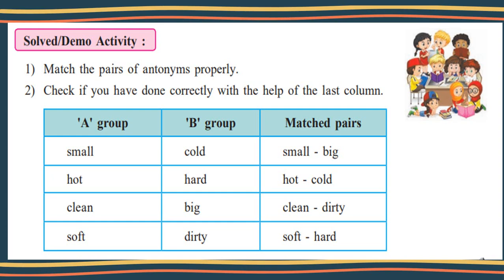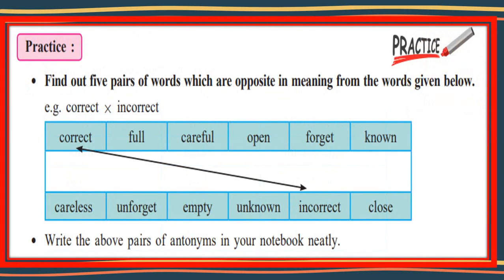And see next activity. Here is given one practice activity. Find out five pairs of words which are opposite in meaning from the words given below. For example, correct, incorrect. Here we have added a prefix and made the opposite word. Correct, incorrect. Now full, opposite word of full is empty. Careful, and opposite word of careful is careless. Open, close. Forget, unforget. Known, opposite word is unknown.